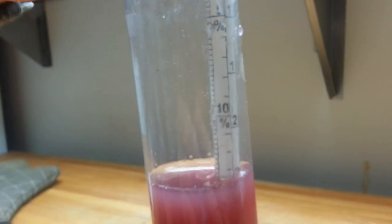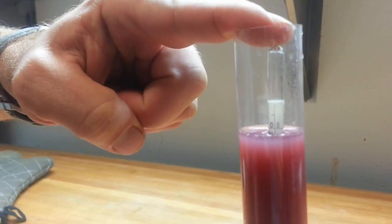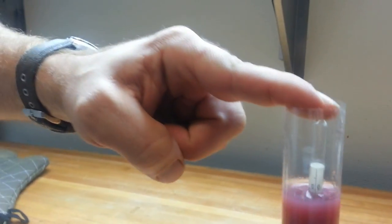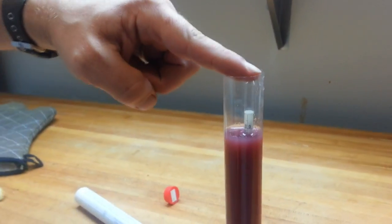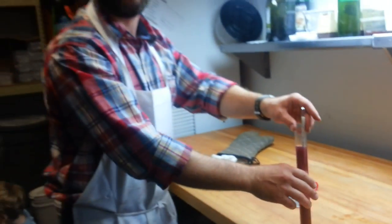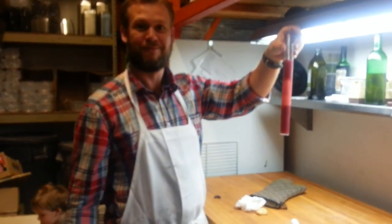After this thing ferments for about a week, it's going to float somewhere like around here because the sugar will no longer be there. The sugar will have been converted to alcohol. Alcohol is less dense, therefore this thing floats lower. Got it. And that's it, man. That's how you use a hydrometer. Okay, ciao.